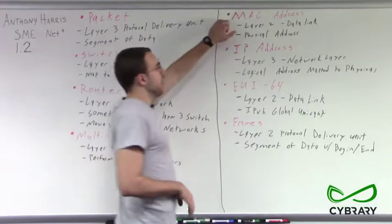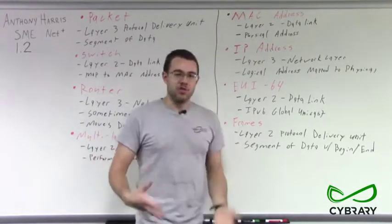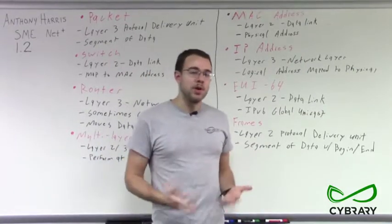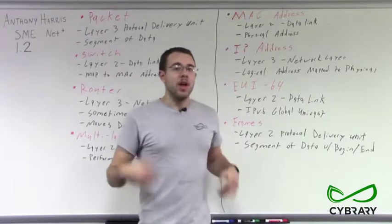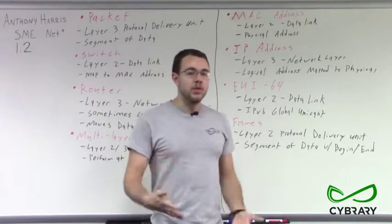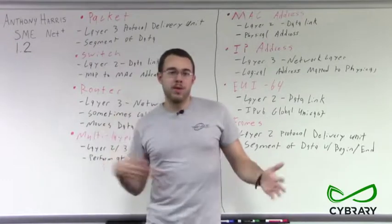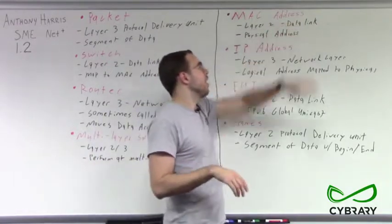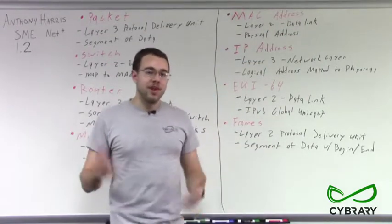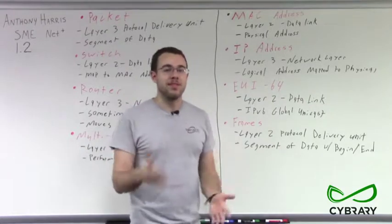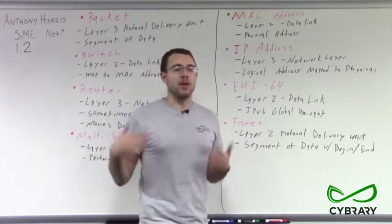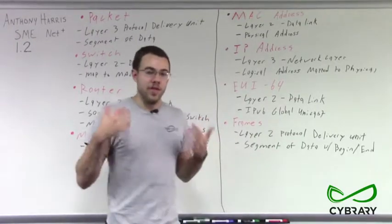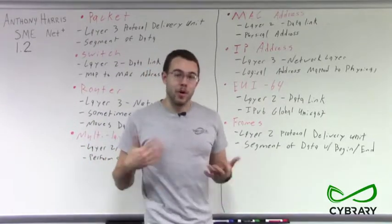First we have MAC addresses. MAC stands for Media Access Control Addresses. We've talked about how MAC addresses are unique addresses that are encoded by the manufacturer onto network interface cards. Each of these network interface cards has a globally unique MAC address, but we typically don't route using MAC addresses. MAC addresses are used for just our layer 2 data link layer. We point information to specific devices, to specific network interface cards using their MAC address. Our MAC address is considered our physical address — the physical address of the network interface card on our machine.